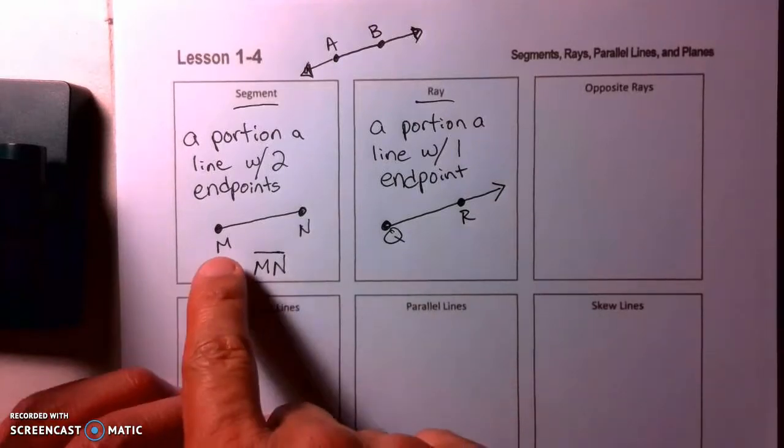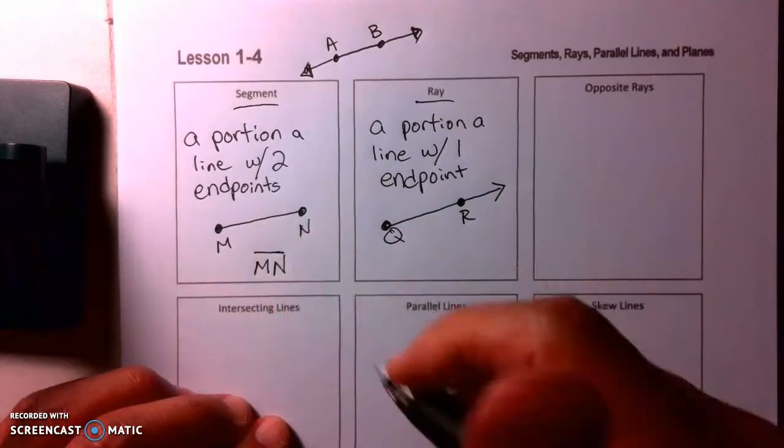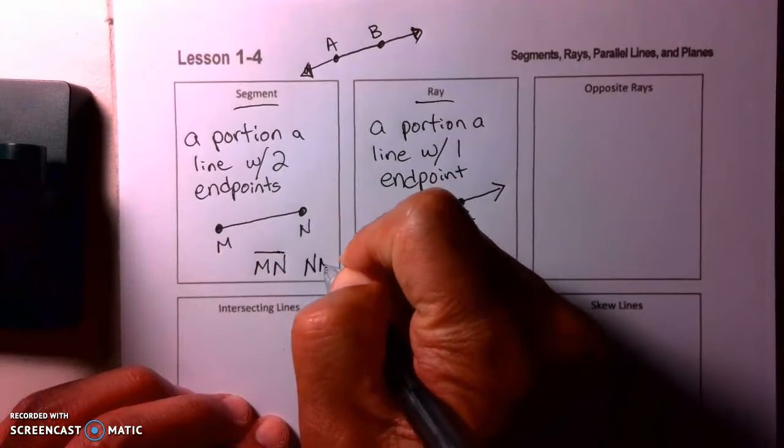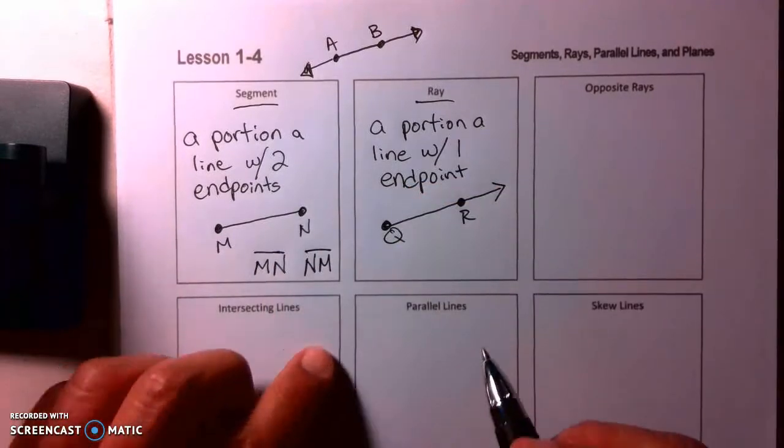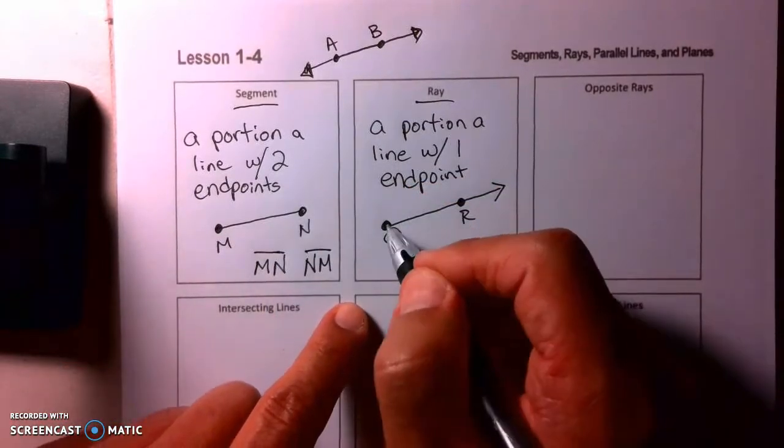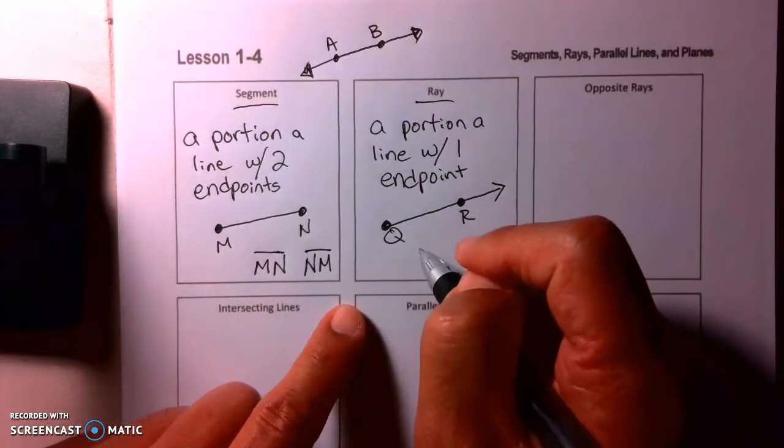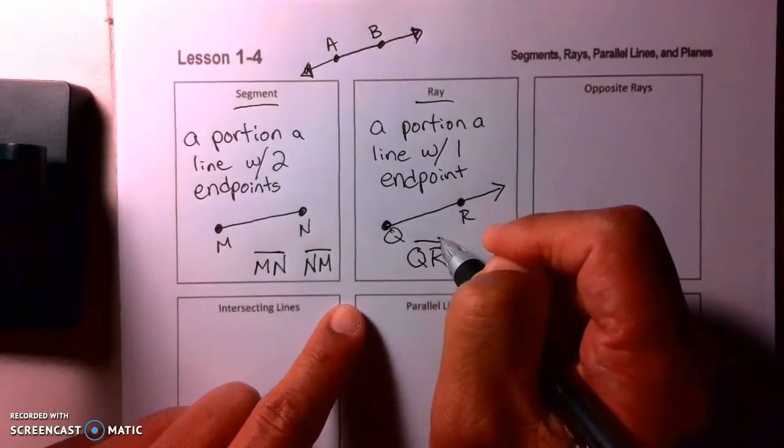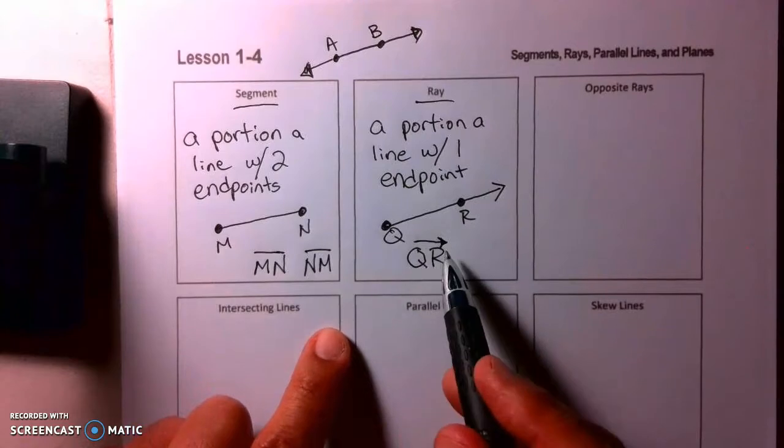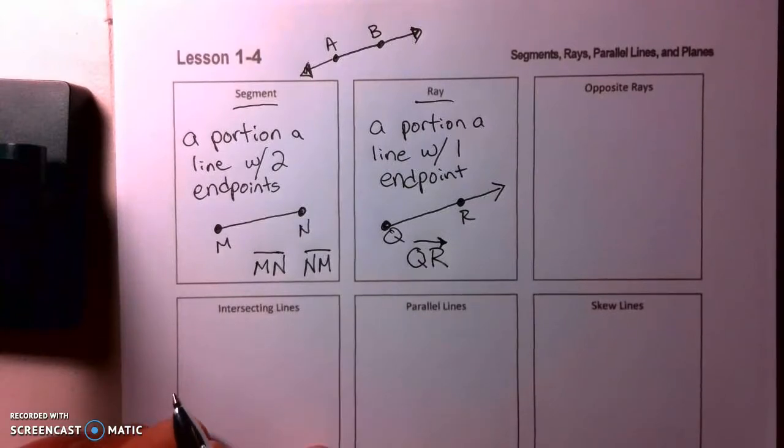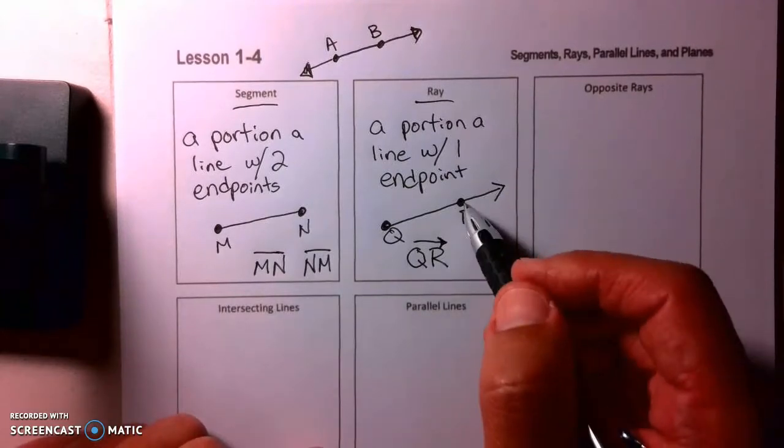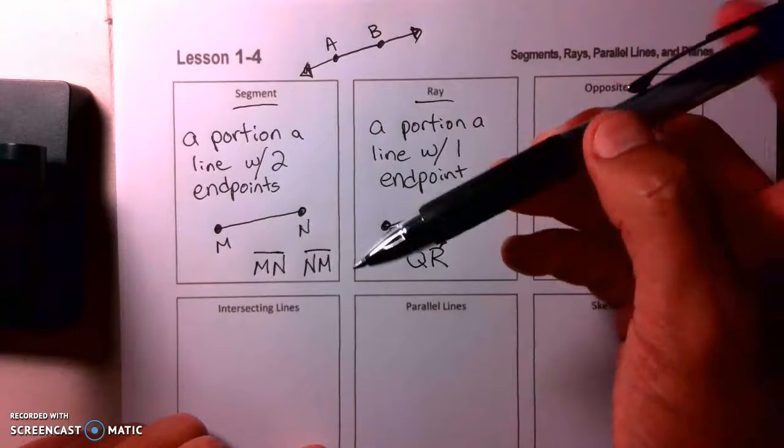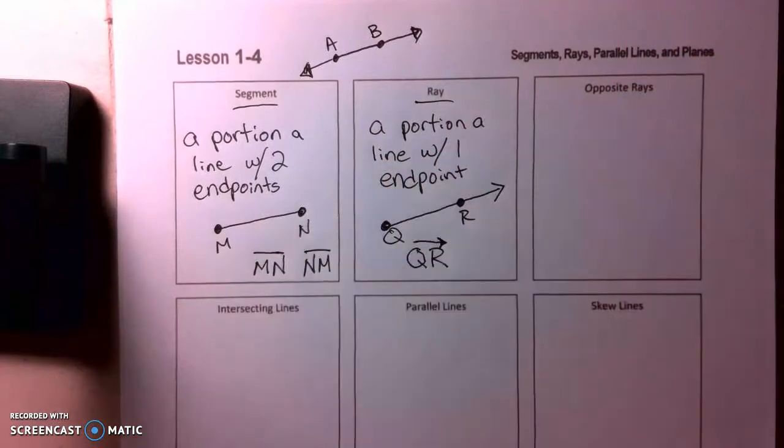Now in the past, like this segment here, I can call this segment MN, or I can call it segment NM, and I just reverse the letters. With a ray, you always want to start with the endpoint. So in this case, it's Q, and then you go in the direction of R. And then I put a one arrow line above it. If you say R first to Q, that means this ray is going this direction, in a different way.